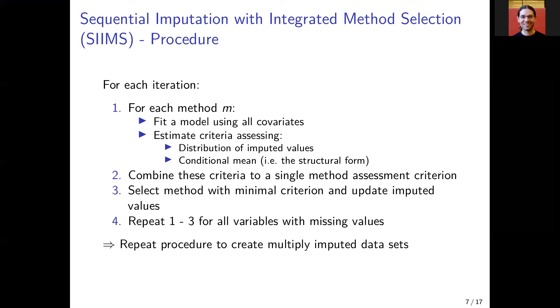The first criterion focuses on the distribution of the imputed values, and the second one focuses on the conditional mean. In the second step, we combine these criteria to a single method criterion.